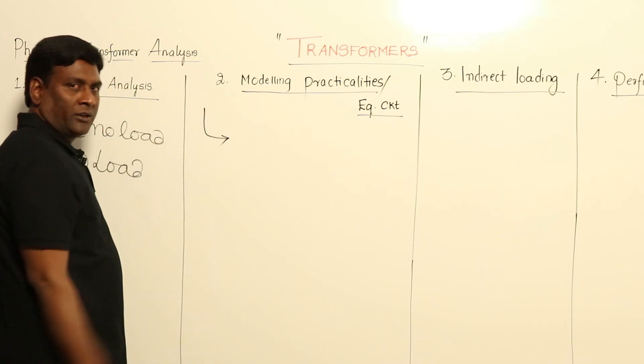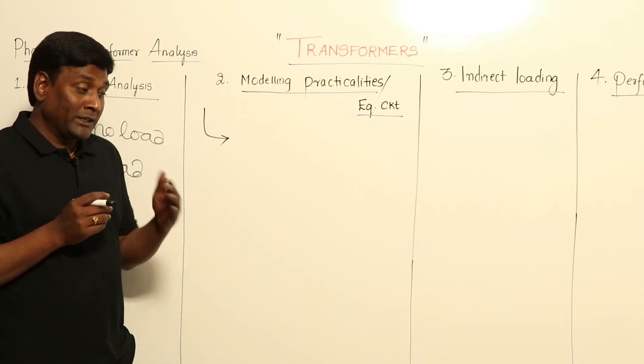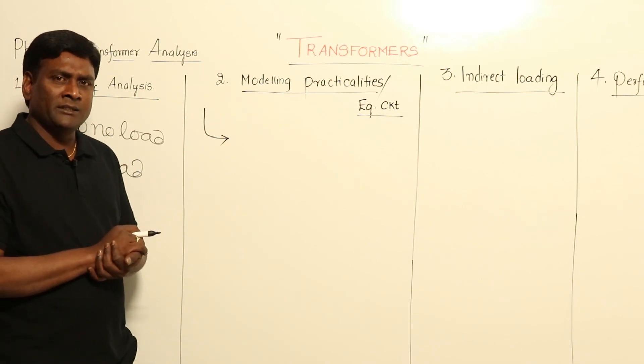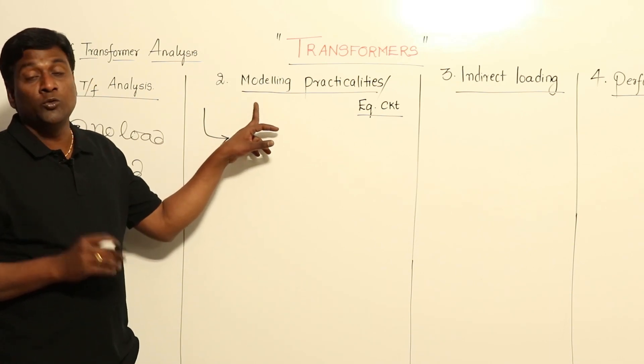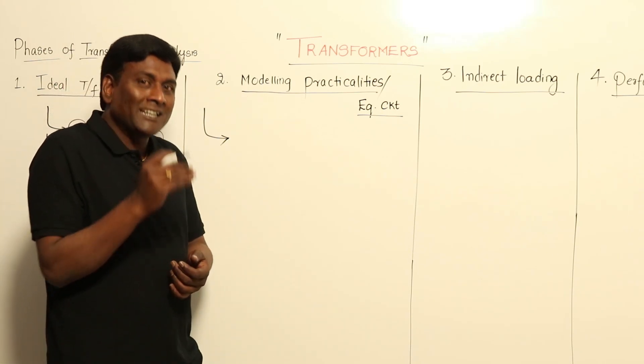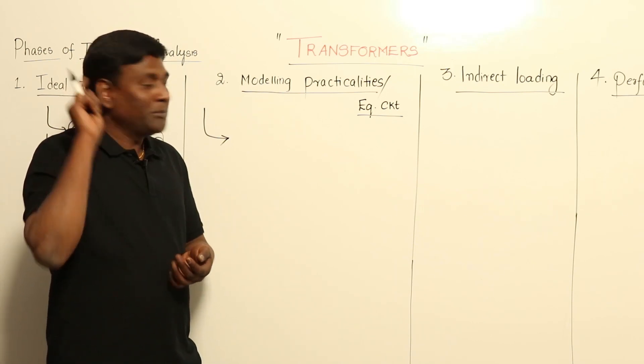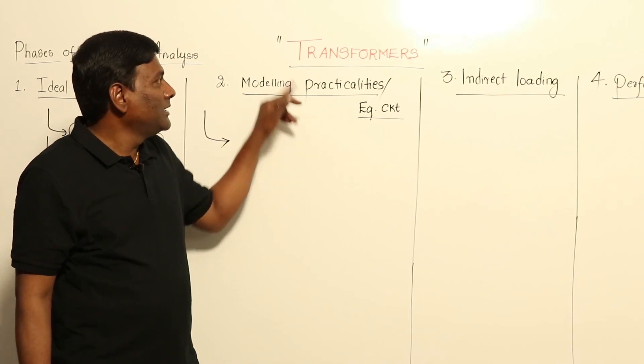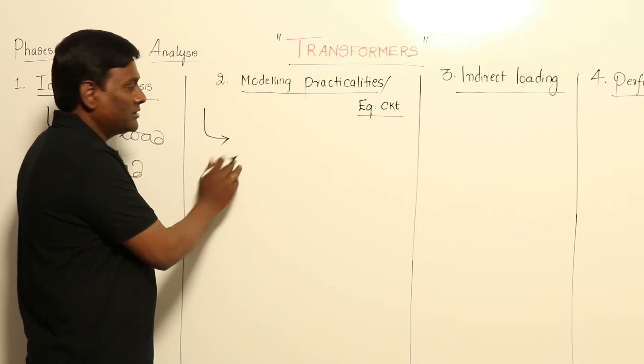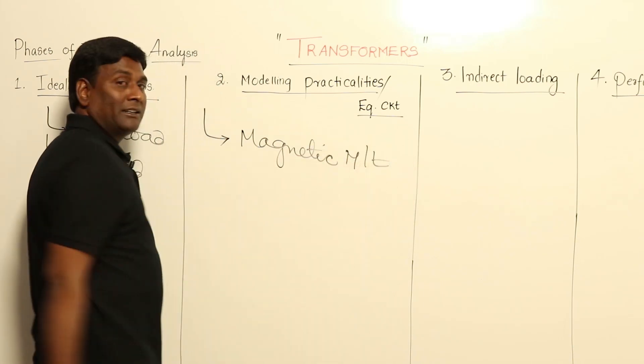In modeling practicalities, we have to discuss the main difference between network theory mutual inductance and transformer machine. In transformer machine, the transformer is going to be nonlinear. If you think of mutual inductance of network theory, network theory is meant for linear time invariant systems. But the difference here is my machine is going to be nonlinear, so non-linearity effects has to be analyzed first. The main non-linearity will come into machine because of magnetic material.